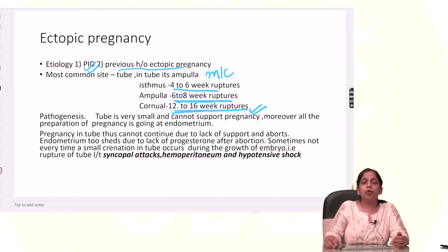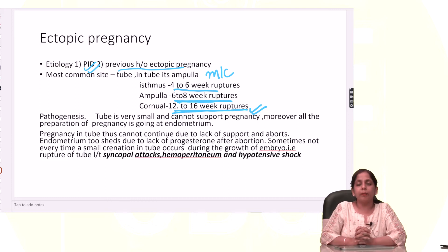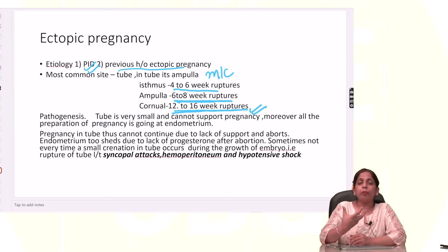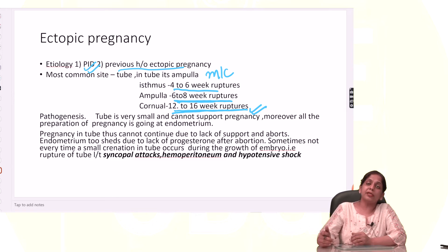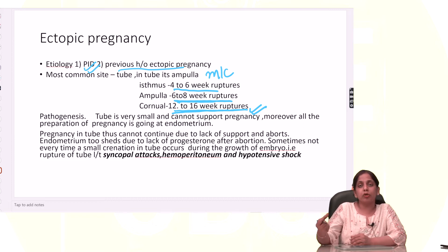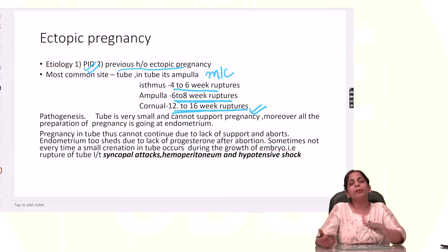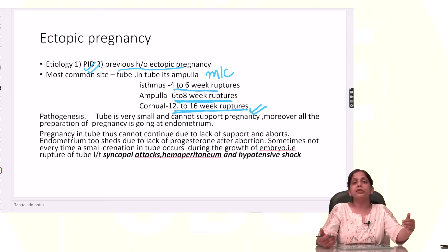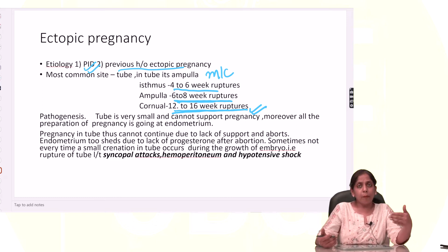In tubal pregnancy, due to tubal inflammatory diseases like PID, the pregnancy does not go to the uterus and the zygote remains in the tube. The tube is a very lean and thin structure, so this pregnancy is not supported like the uterus — which has myometrium, endometrium, progesterone, and secretory endometrial glands. There is no such preparation in the tube, so the pregnancy doesn't grow well and it aborts very quickly.